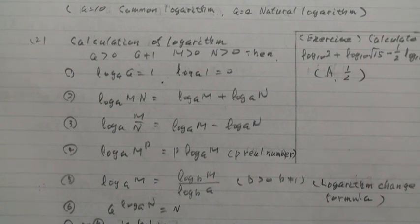And check 3, log A M over N equal log A M minus log A N. And check 4, log A M to the P equal P times log A M.